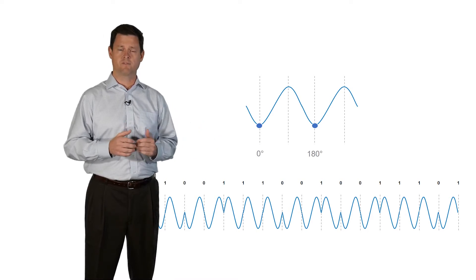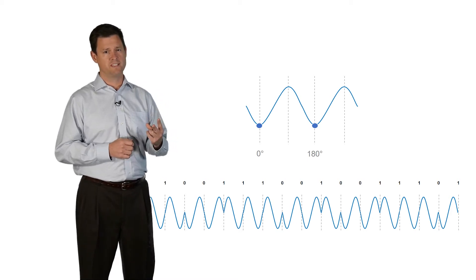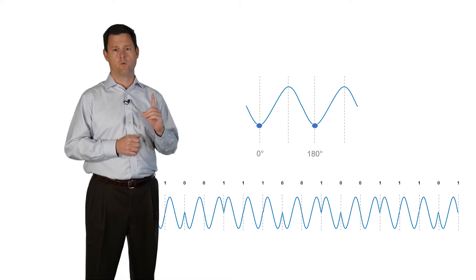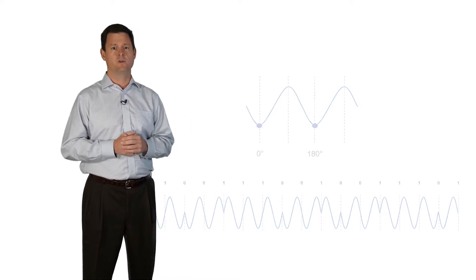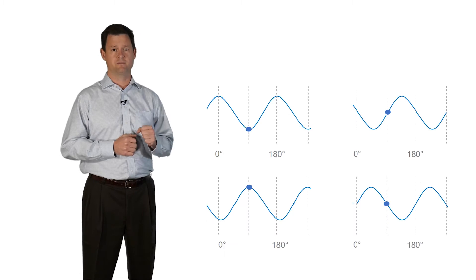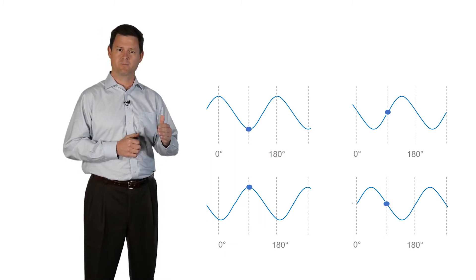While phase shift keying provides improved transmission performance, because we're only using two phase states, like on-off keying, it also provides one bit per symbol. Now that we can detect phase, we can enable more throughput on the same signal by creating more phase states, shifting the signal by smaller degrees.